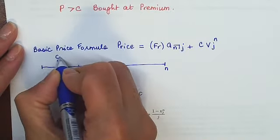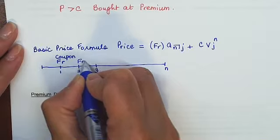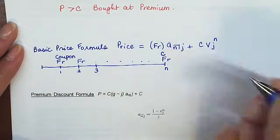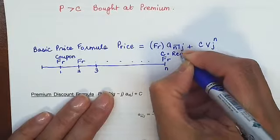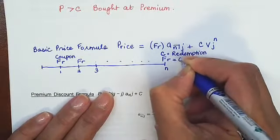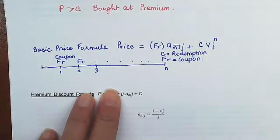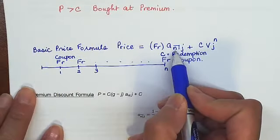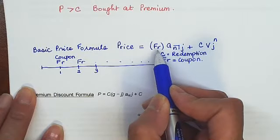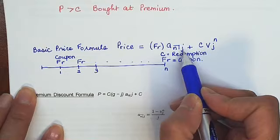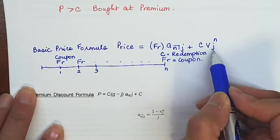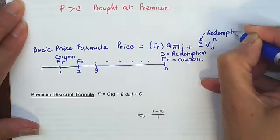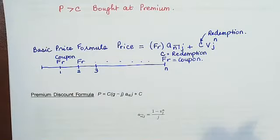The coupon amount is FR. That's the coupon. And it pays FR throughout, starting at time 1, ending at time N. And at time N, it also pays you a redemption. So when I calculate the price, which is the present value of this stream, I have an annuity for N periods of FR, that's the coupon amount, at interest rate J plus the redemption which has been discounted by N years. Let's label this the redemption. So that's my basic price formula.